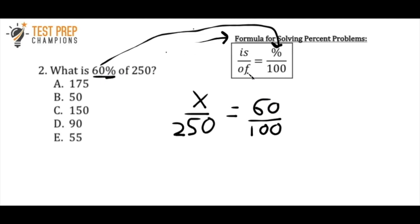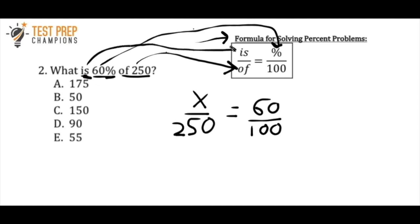Now in the formula where it says 'of', I see 250 — it says 'of 250' — so I substitute 250 into the equation for the word 'of'. What's the question actually asking us to find? It says 'what is' — that's the unknown. We don't know what that is yet, so we replace 'is' with a variable x, because that's what we're trying to find.